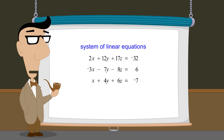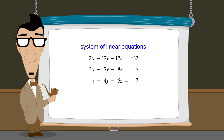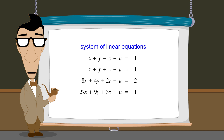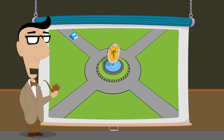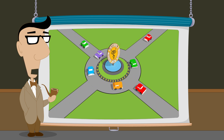In the last several lectures, we have seen how systems of linear equations can be solved using matrices and the process of Gauss-Jordan elimination. This technique is especially useful in systems of more than three variables, where the substitution or elimination methods can become cumbersome. In the next several lectures, we will take a look at some real-world applications which can be modeled by systems of linear equations with four or more variables.